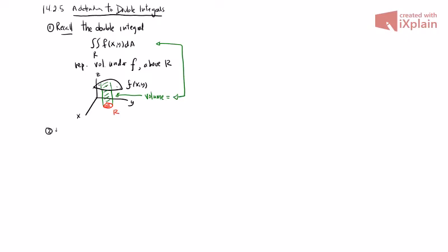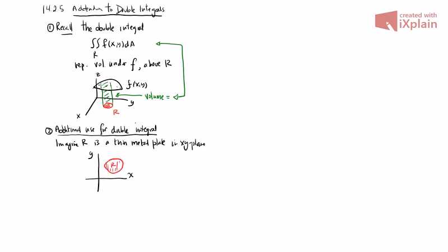An additional use for a double integral would be as follows. The thing that makes this nice is it's a two-dimensional thing. What I want you to do is imagine that r in the xy plane is like a very thin metal plate which has certain densities at different places. Imagine that r is a thin metal plate in the xy plane. Thin is like infinitely thin, arbitrarily thin, uniformly thin.